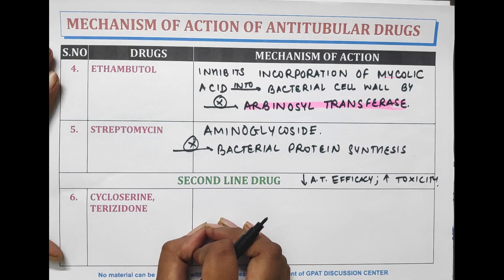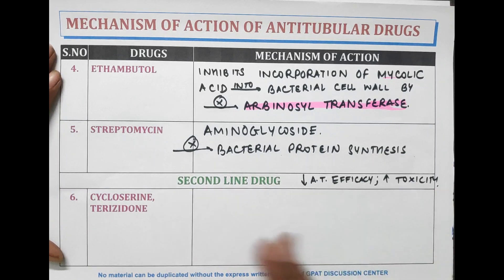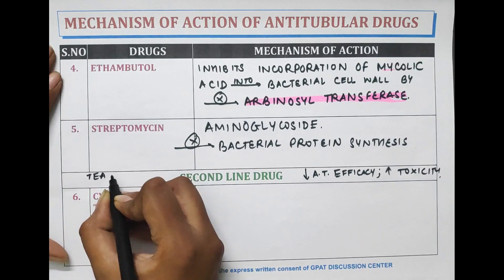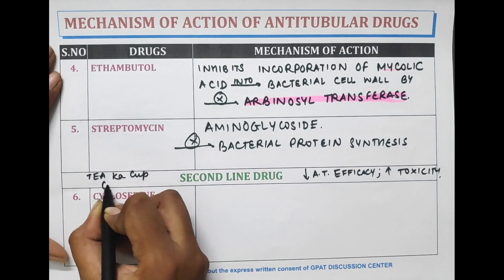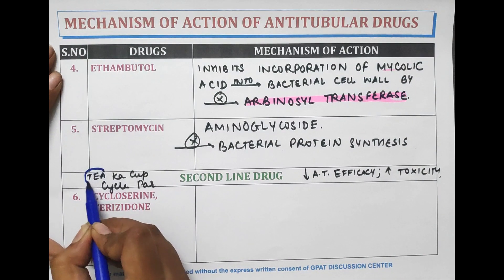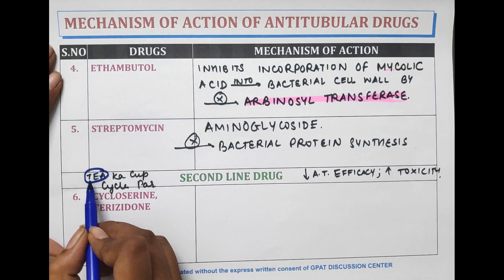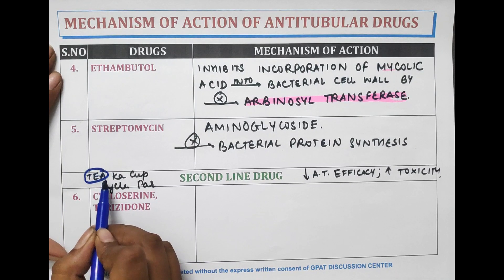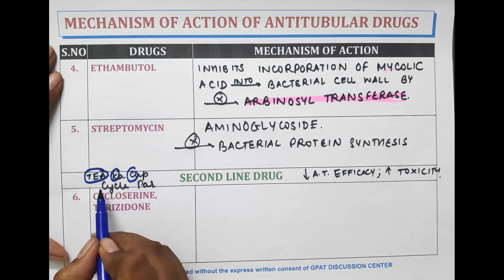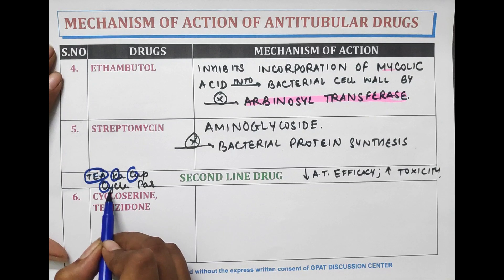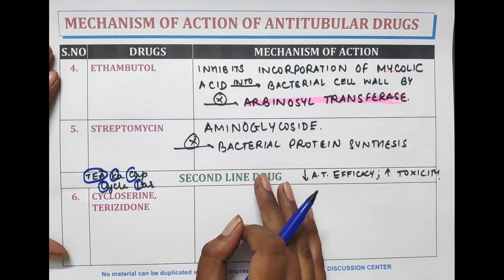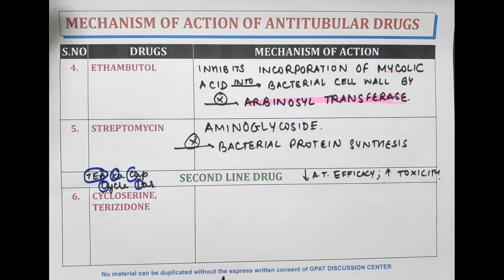The mnemonic to remember second line drugs is 'T ka ka p cycle per'. T-E-A means thiacetazone, ethionamide, amikacin. K for kanamycin, C for capreomycin, again C for cycloserine, and P for para-aminosalicylic acid.